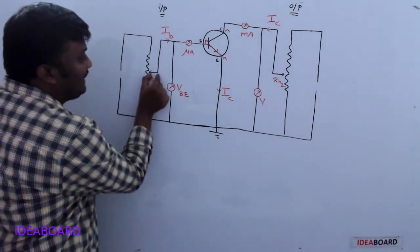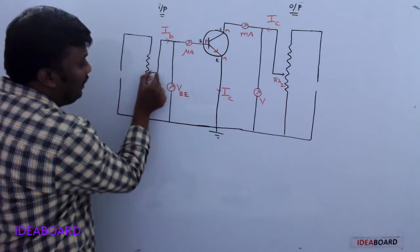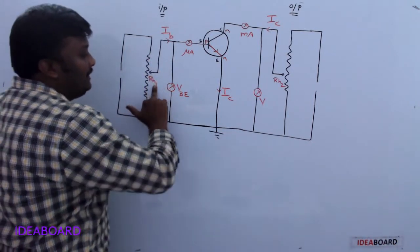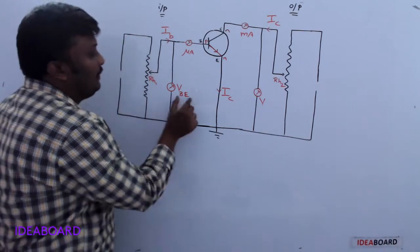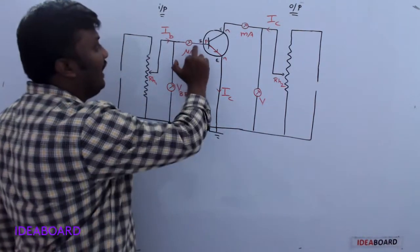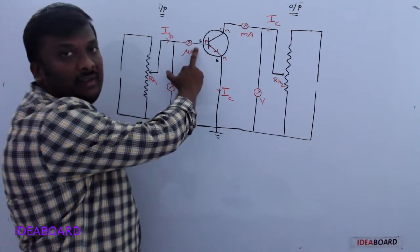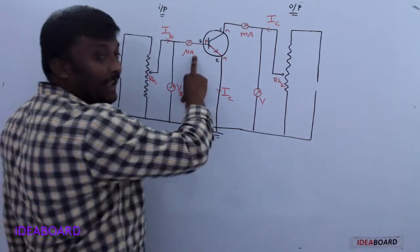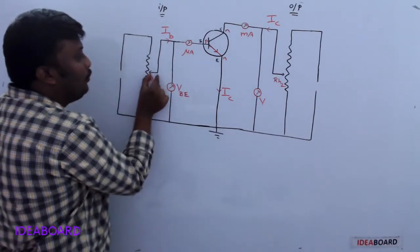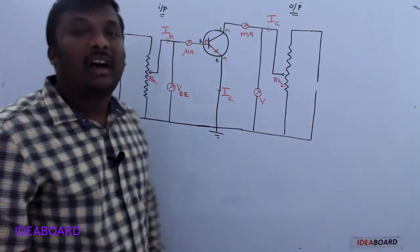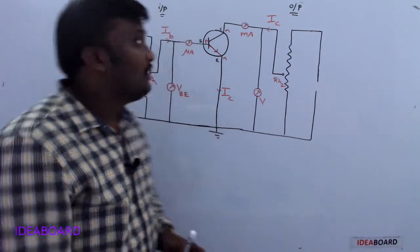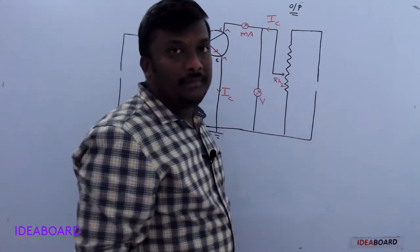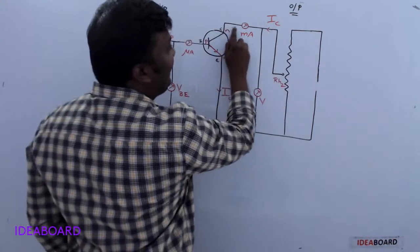There is a rheostat — a variable resistor — connected here. When the slider moves along the resistor, VBE changes and IB also changes. To vary VBE and IB, you must move the slider of the rheostat. That covers the input side.